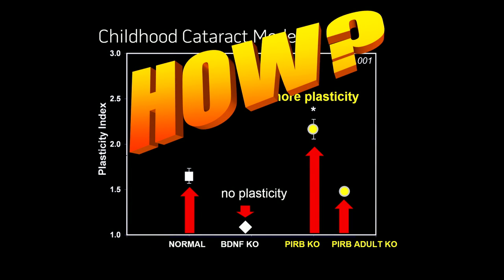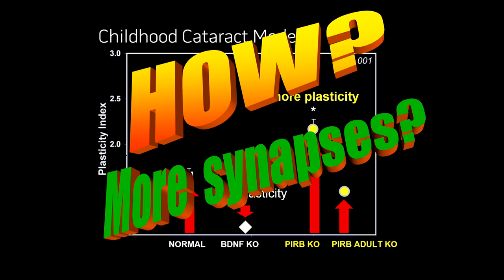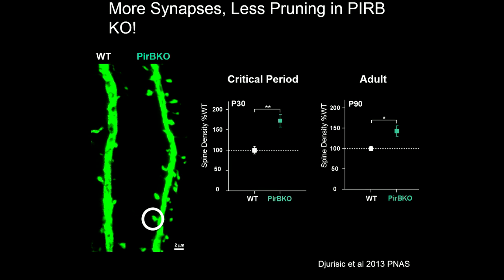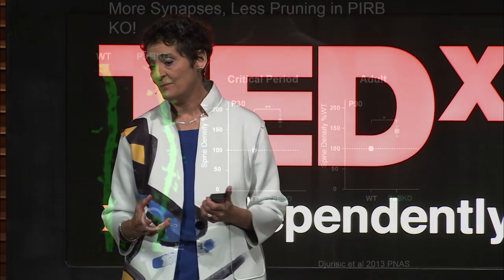That adult plasticity wasn't as much as in development, but it was promising. Normally the critical period closes and patching one eye in a mouse shows no expansion of the other eye, but here was a mouse that still had expansion. We counted synapses — the little knobs on nerve cells that are the post-synapse — and discovered there were many more of these synapses, the sites for plasticity, in the PIR-B knockout mice than in normal mice. And there were more synapses present in the adult mouse brain in the PIR-B knockout mice as well.